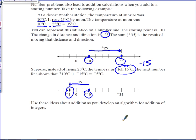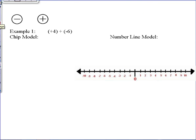Use these ideas about addition as you develop an algorithm for addition of integers. Now we are going to write three examples in our Cornell notes. The first one, example one, is positive 4 plus negative 6. So if you would pause the video now, write that example in your Cornell notes and then we will work the problem.